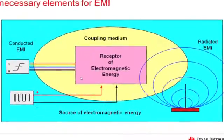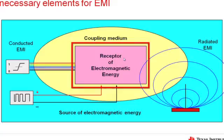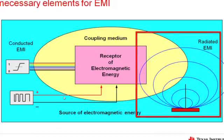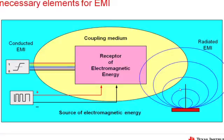Three elements are necessary for EMI to take place. First, we have to have a receptor — a circuit that's sensitive to the particular frequencies contained in the EMI. Then we have to have a source, be it either conducted EMI, something directly connected via wires to our circuit such as data lines or power supply lines, or radiated EMI, where the source is something transmitted coming off an antenna or a wire. Then there has to be a coupling path between that source of EMI and the receptor — either the wires themselves for conducted EMI, or the air and space between the antenna and the receptor for radiated EMI.